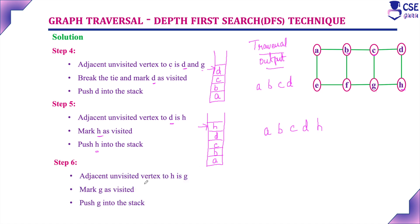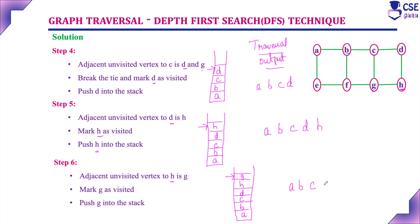Next step: currently visited vertex is H. The adjacent unvisited vertex to H is G, because D is already visited. So the adjacent unvisited vertex to H is G. We mark G as visited and push G into the stack. The stack contents are now A, B, C, D, H, G, with G at the top. The traversal output is A, B, C, D, H, G.